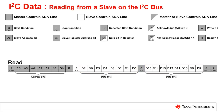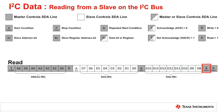The slave sends the second set of consecutive bits, the second byte, and then the master will not acknowledge, or NACK, letting the slave know it is finished receiving the data. The master then generates the stop condition to terminate the transaction.